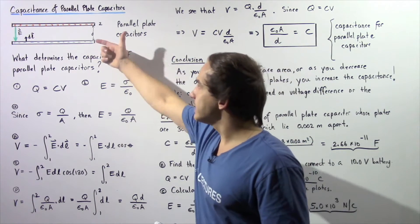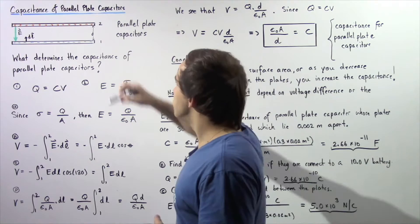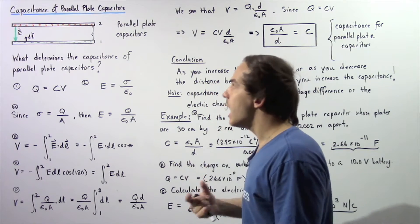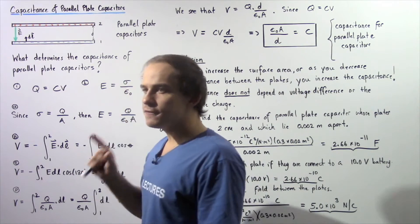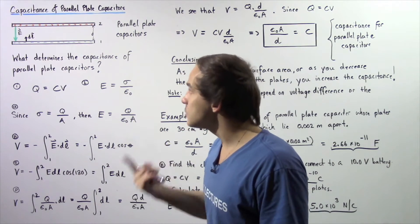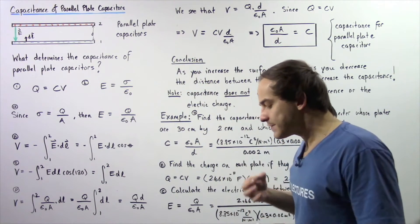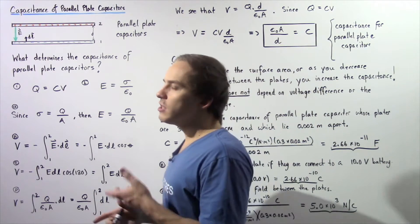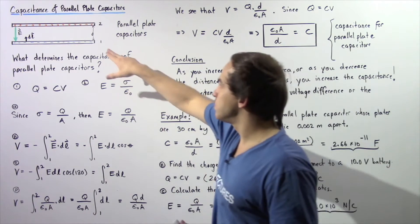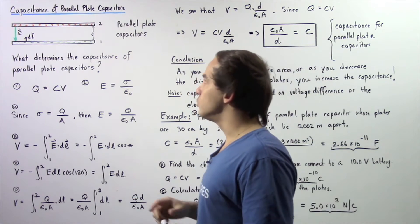Let's begin by looking at the following parallel plate capacitor, which consists of two parallel plates. Plate one has a negative charge and plate two has the same quantity of positive charge. Our electric field lines begin on the positive plate and end on the negative plate, as shown by the following green vector. This is plate number one and this is plate number two, with the separation between them given by lowercase d.